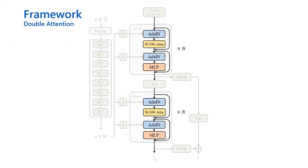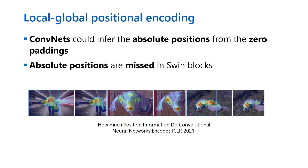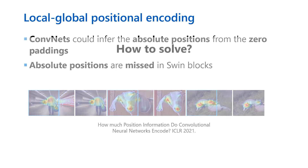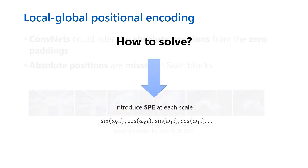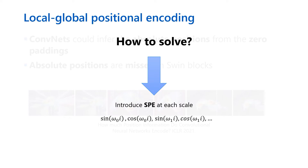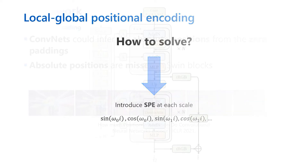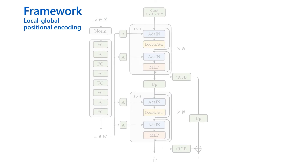Here is the modified basic block of our generator. Previous work has shown that Conv2D can infer absolute positions from zero padding. Such essential information is missing in Swin blocks using relative position encoding. To solve this problem, we introduce sinusoidal positional encoding at each scale, which informs the global position to the network. Combining relative positional encoding for local context and sinusoidal positional encoding for global position.